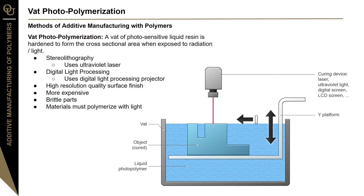VAT photopolymerization, or VPP, uses a vat of photosensitive liquid resin exposed to radiation or light. The light hardens the resin layer by layer into a 3D component. There are two main methods: stereolithography, which uses ultraviolet lasers to cure the resin, and digital light processing, which uses a DLP projector to cure the resin. VPP produces parts with high resolution and high-quality surface finish. Unfortunately, it's more expensive than other methods, parts are brittle, and material selection is slimmer because materials must polymerize with light.